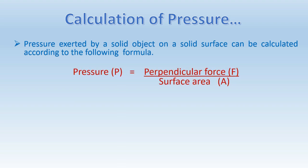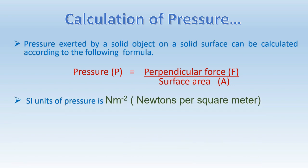The SI units of pressure is Newtons per square meter. It is also indicated by Pascals. Accordingly, 1 Newton per square meter is equal to 1 Pascal.